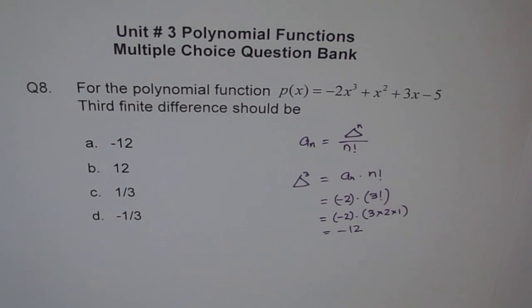So option A is the right answer. All those students who didn't know about this formula, they should make a note of this. It helps a lot to find equation of a polynomial from the given data. It takes care of at least one equation. You will find it very useful. An, the leading coefficient, is equal to constant finite difference divided by n factorial, where n is the degree of polynomial.